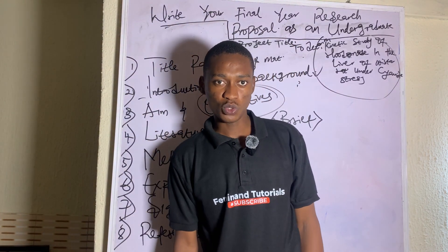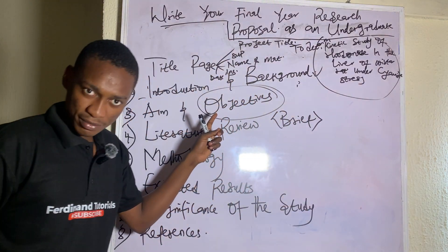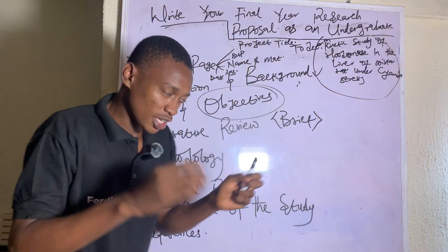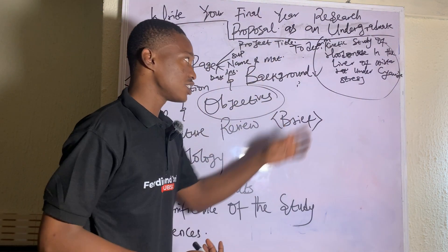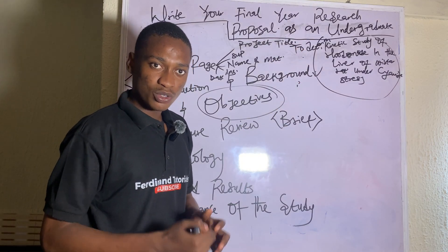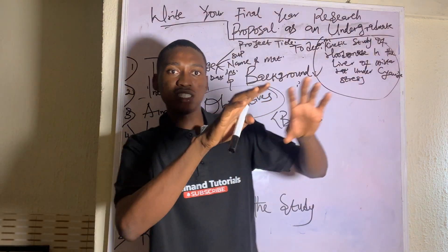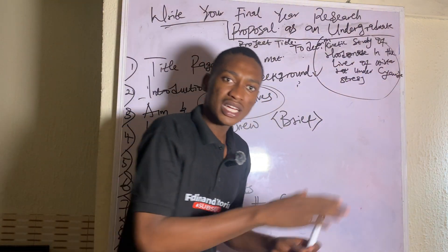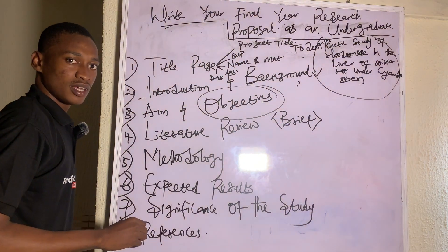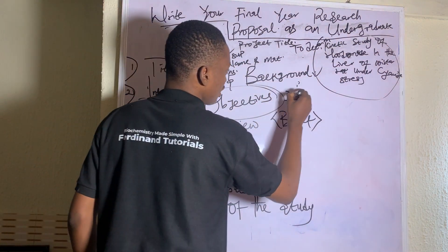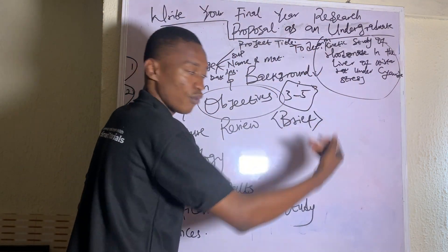Think of it this way: your aim is the goal, and your objectives are the steps you follow to get there. For instance, an objective could be: 'To determine the Km and Vmax of rhodanese enzyme activity,' or 'To identify the rats and then measure the cyanide concentration in the liver of the Wistar rats.' Your objectives should usually be three to five — don't go beyond that as an undergraduate.